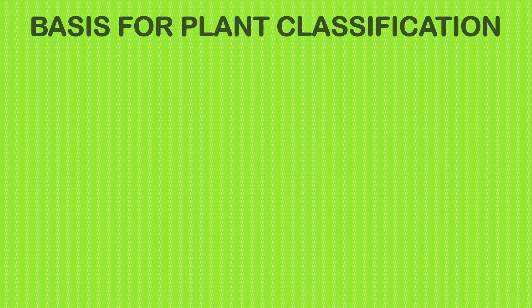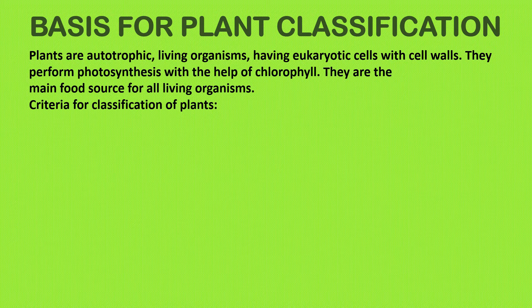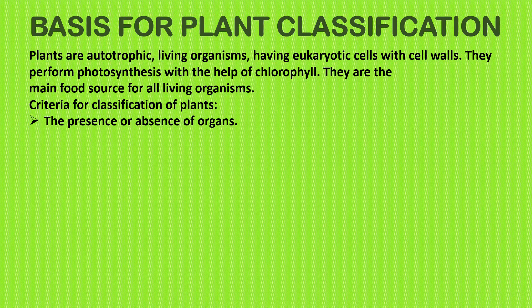What is the basis for plant classification? First of all, plants are autotrophic — they make their own food. They are living organisms with eukaryotic cells and well-defined cell walls. They perform photosynthesis with the help of chlorophyll and are the main source of food for all living organisms. Plants are classified on the basis of the presence and absence of organs such as root, stem, leaves, flower, and fruit. Some plants have all of them and some don't — for example, moss does not have any of these organs.